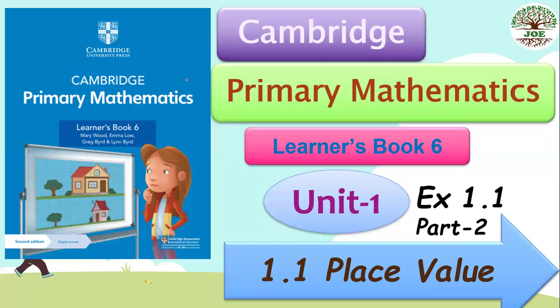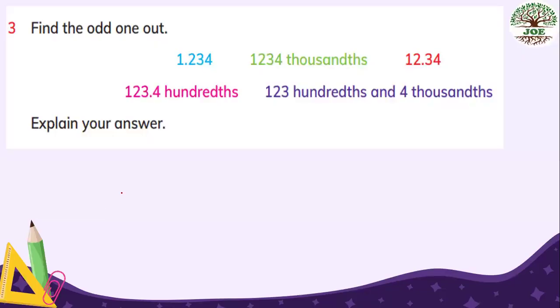This is exercise 1.1. This is number 3 of exercise 1.1. Find the odd one out. The odd one out is the different one. You have to find the different one. 1.234.